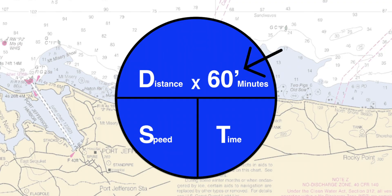The number 60 next to the letter D ensures that the time is calculated in minutes, which must be converted back to hours and minutes when solving for a question pertaining to estimated time of arrival.